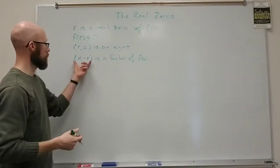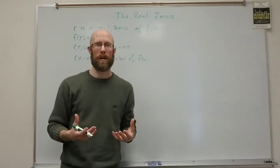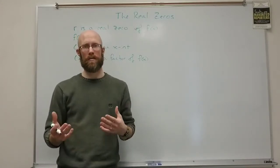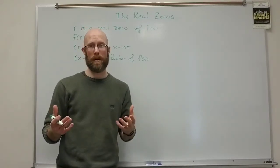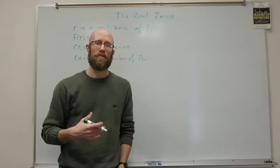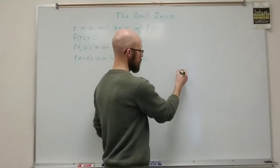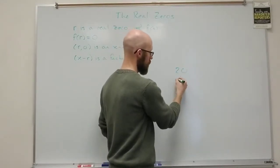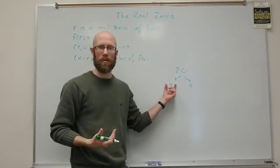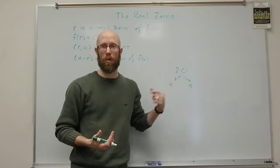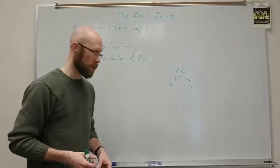Think about factors of a number. If you wanted to factor the number 20, you have 2 and 10, 5 and 4, 1 and 20 — they don't have to be integers. Factors of a number are two numbers that you multiply together to get it. If you knew one of the factors, you would divide that factor into 20 to get the other one. So division is very important here — factoring and division are very related to each other. Same with polynomials, not just numbers.